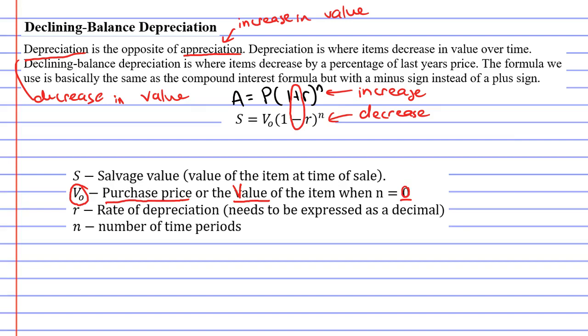What's this talking about? Well, n equals zero is talking about the time. It's the point at which zero years have passed, and if zero years have passed, this is when you first purchase the item.